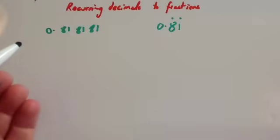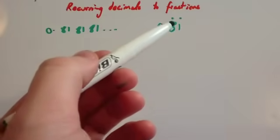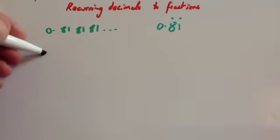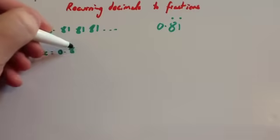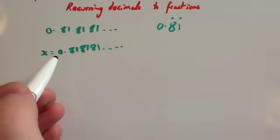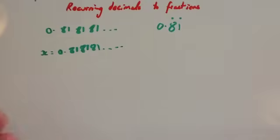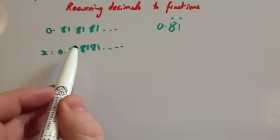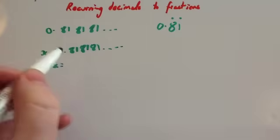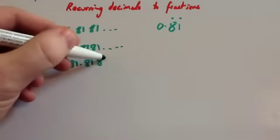Let's look at another one. Now let's convert 0.818181... — or 0.81 with dots above both digits, showing that 8 and 1 recur — into a fraction. First thing: let x equal the decimal, so x = 0.818181... We want two equations that both have 8,1,8,1... after the decimal point so they cancel out. So we're going to times by 100. 100x = 81.8181...